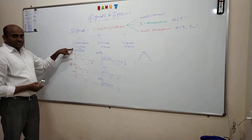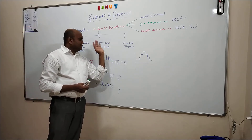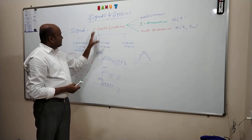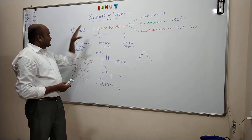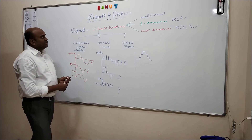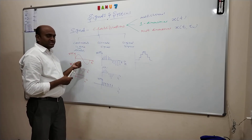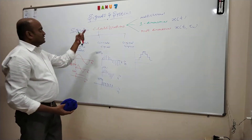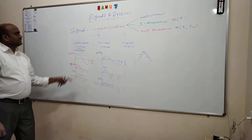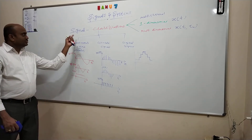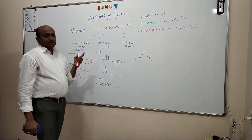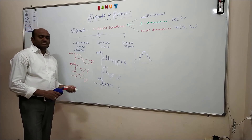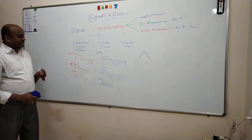Analog communication depends upon continuous-in-time signals. Digital communication uses discrete signals whose magnitudes are quantized. The advanced subject, digital signal processing, will discuss more about discrete signals, while signals and systems will focus more on continuous-in-time signals — the majority of problems we are going to solve will be based on this category. So that is about the classifications of signals. We have seen two classifications: multichannel/one-dimensional/multidimensional, and continuous in time/discrete/digital. There are other classifications we will see in coming videos.